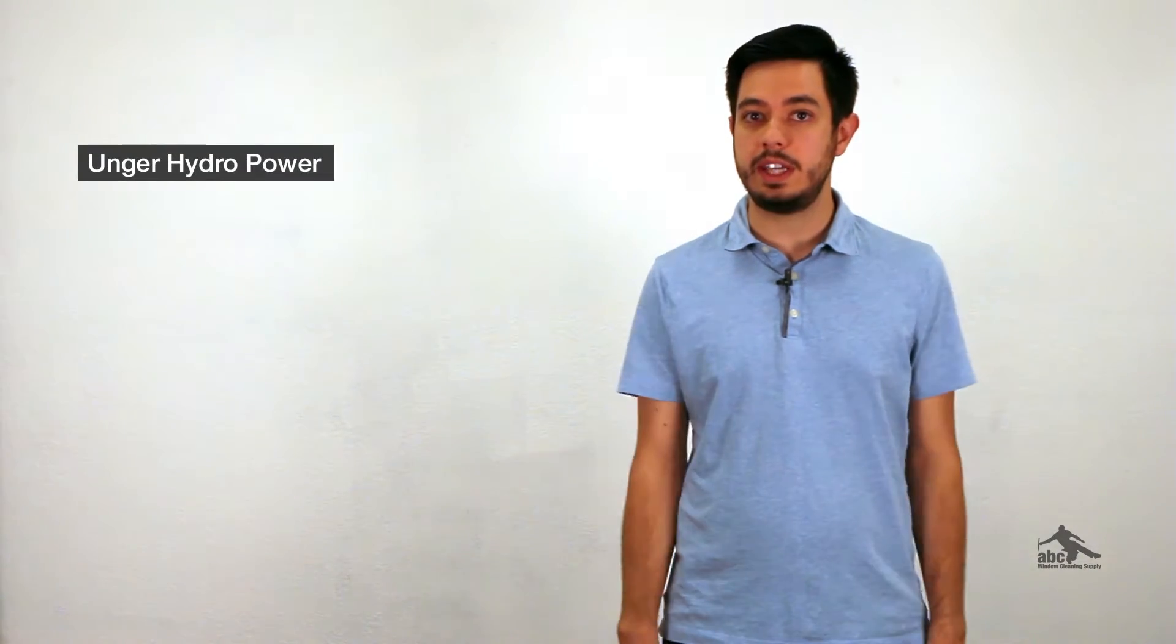In this video we are going to crunch the numbers and take a look at two specific examples. One being the Unger DI-only system and the second being the ABC Triple Crown Phaser multi-stage system. So let's go ahead and dive into the Unger hydropower DI system.